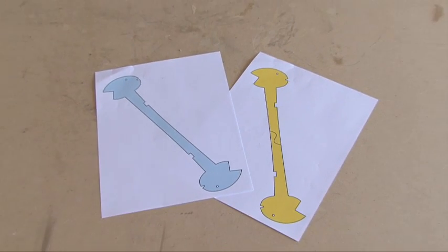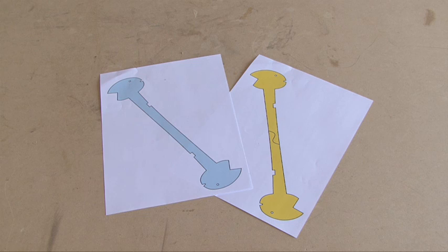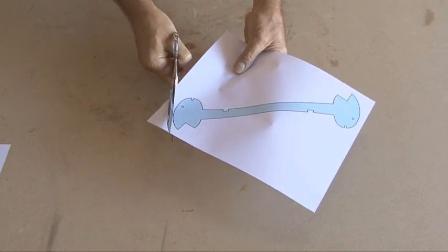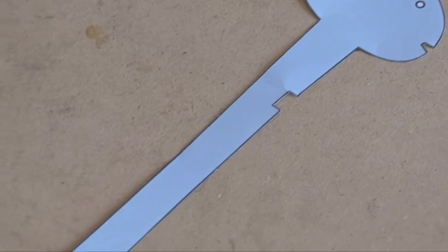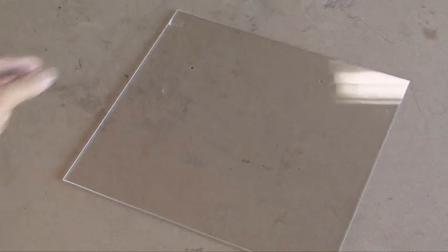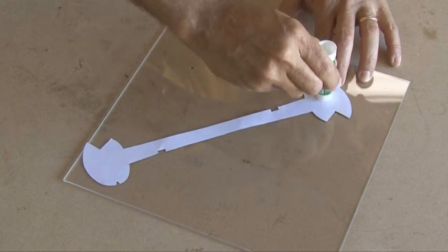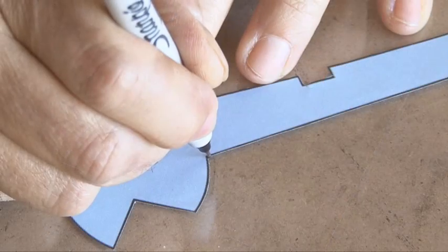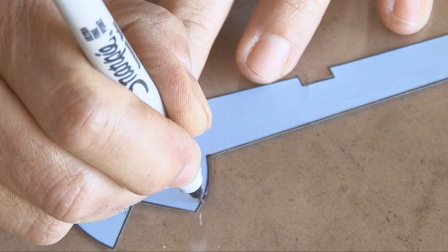You can download the two templates for this project at the link on this video. The yellow template is the key template, and the blue one is the one we're going to start with. Cut that out with scissors, then get a piece of plexiglass. I used a glue stick to adhere the template to the plexiglass, then used a fine point Sharpie and drew the outline of the template.